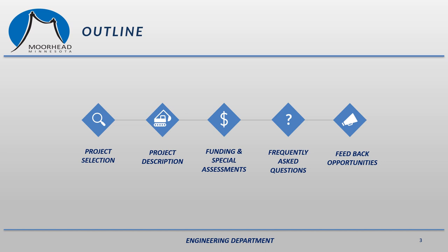In this presentation, we'll go over a brief explanation of how the city selects its project areas, how we decide which streets to do, and the different types of work we can do. I'll also explain the type of work we are proposing to do in your neighborhood. We'll also go over funding and special assessments, as well as some frequently asked questions. We'd also like this to be an opportunity for residents to provide feedback, and I'll go over that later in the presentation.